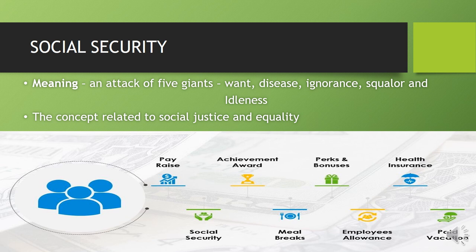So what is the meaning of social security? According to Lord Beveridge, social security is an attack on five giants. Those five giants are want, disease, ignorance, squalor, and idleness. The concept is related to social justice and equality. Social security is designed to prevent and cure disease, to support when people are unable to earn, and to restore them to gainful employment.